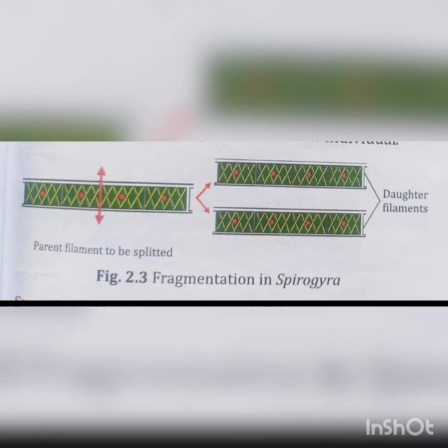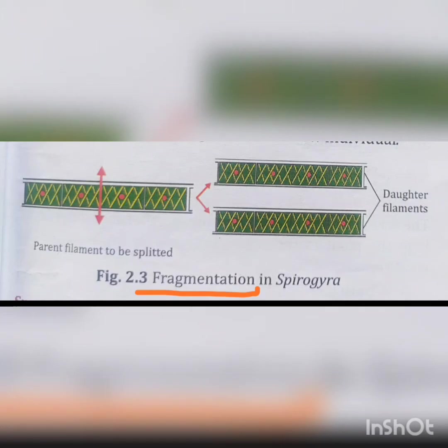The next method of asexual reproduction is fragmentation. In this type of asexual reproduction, the filamentous body of lower plants like Spirogyra breaks up into two or more fragments. Each fragment grows into a new individual.